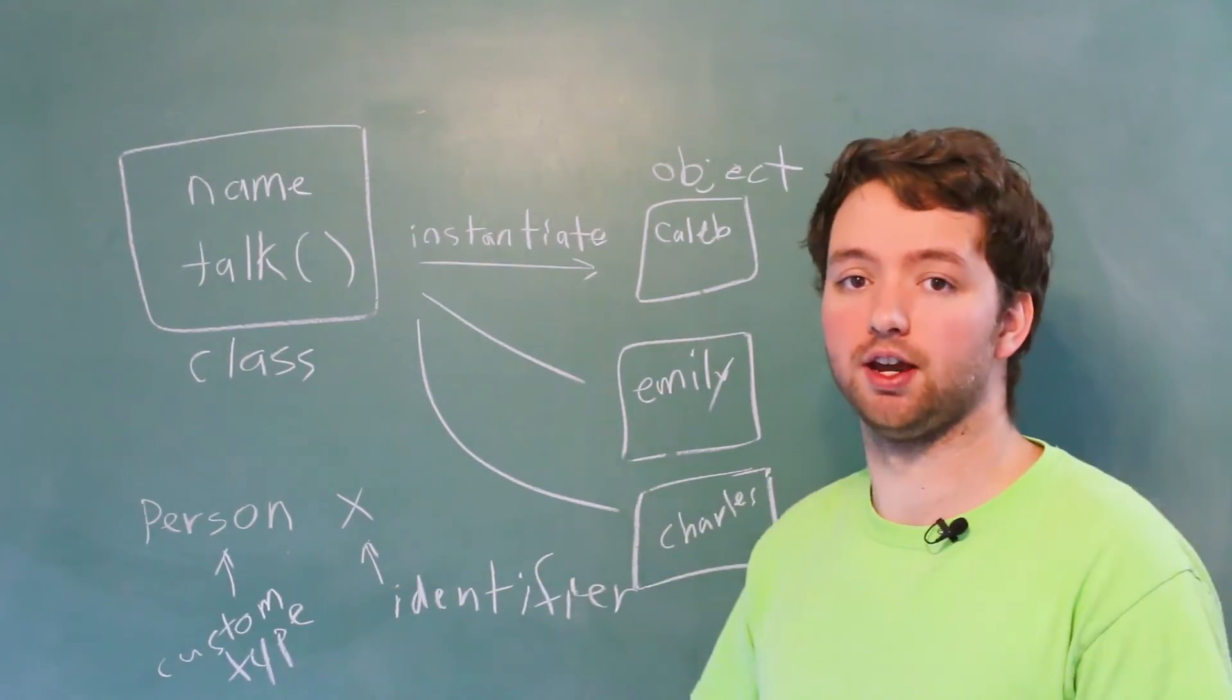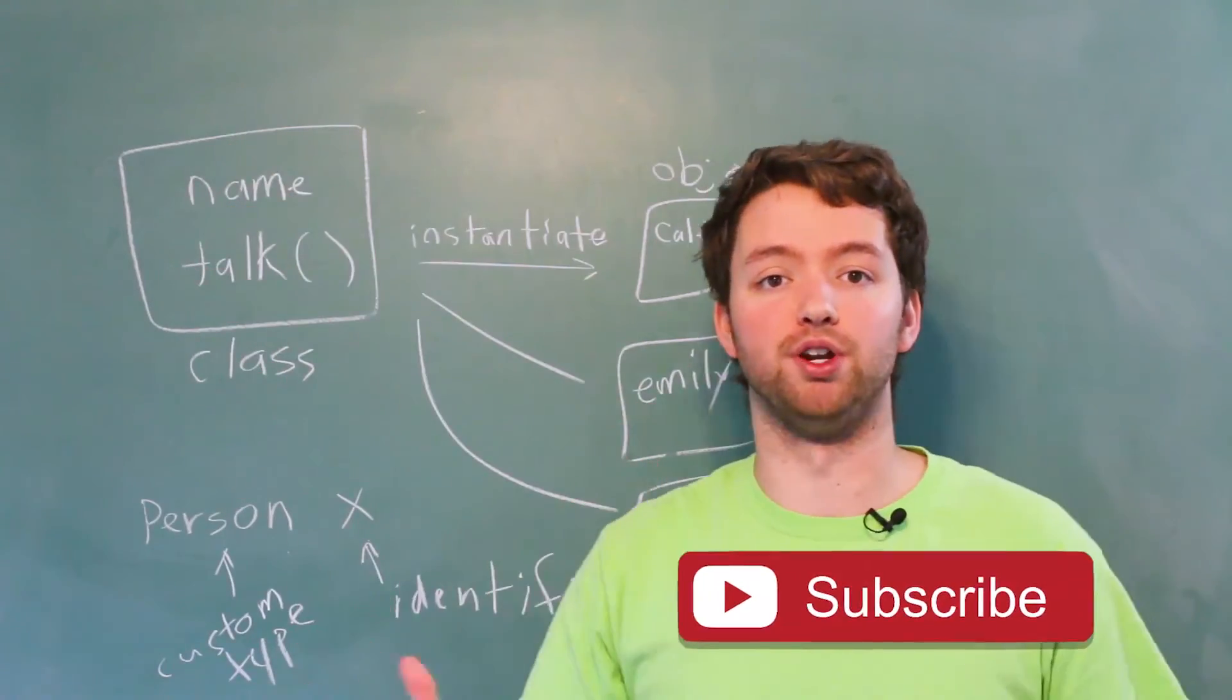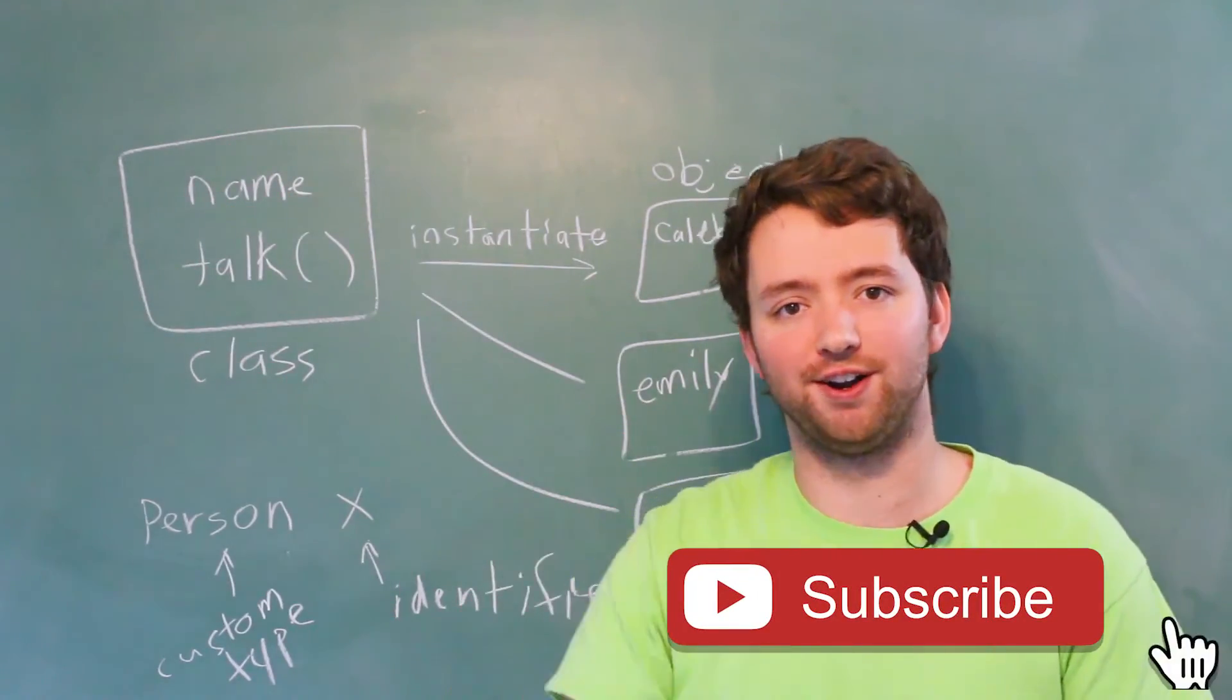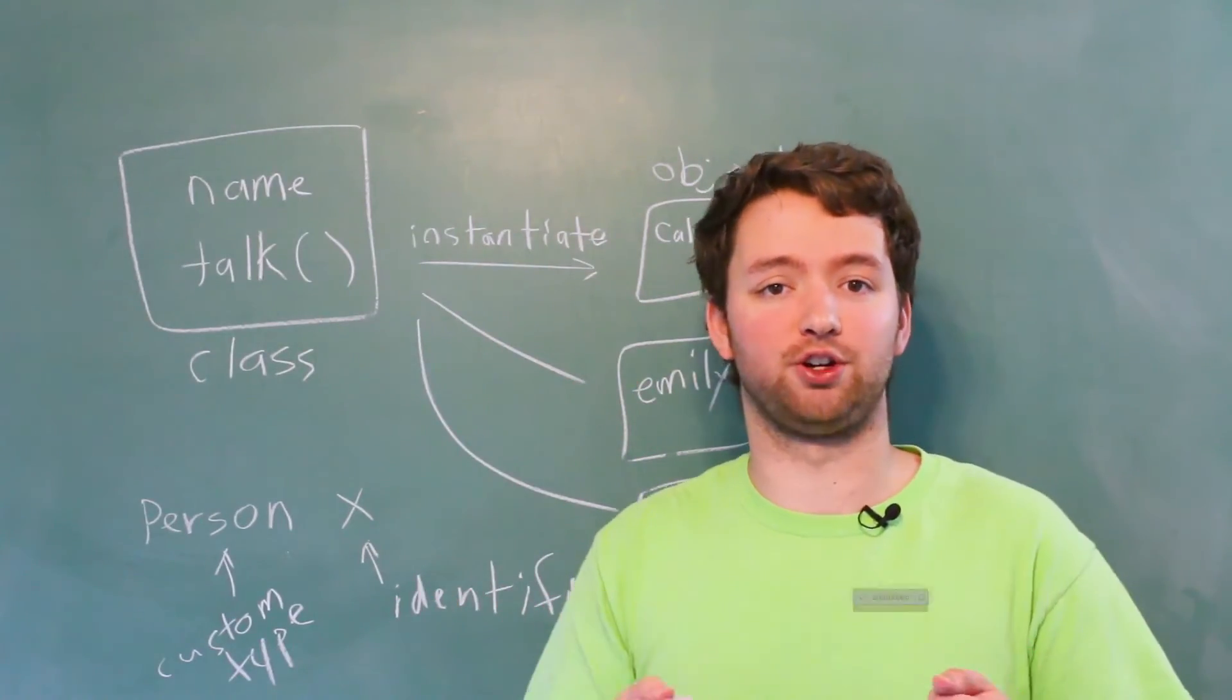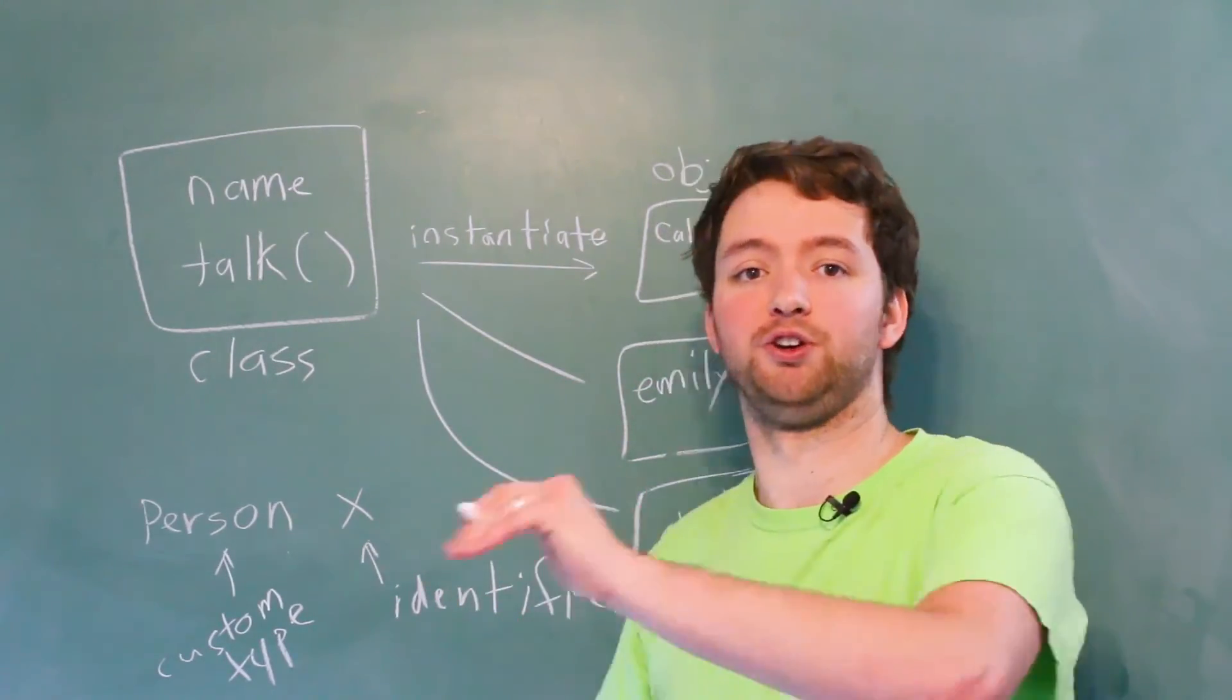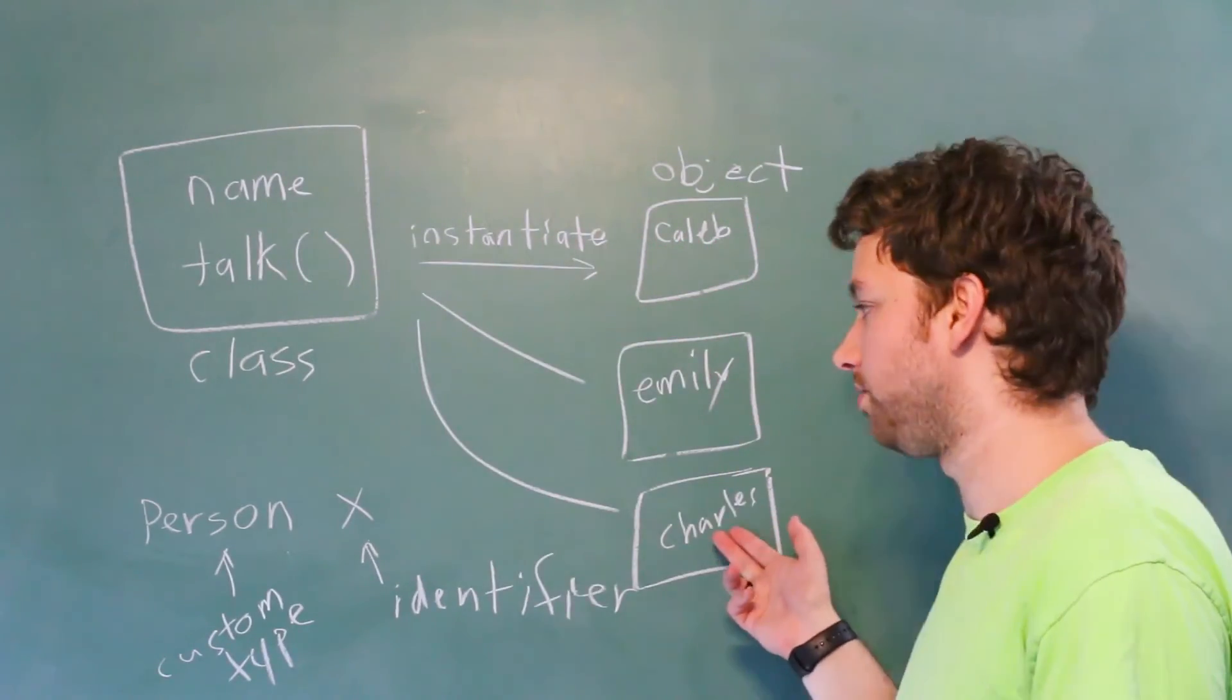But for now, all you need to understand are three things. Class is the blueprint, the structure. It's the cookie cutter. An object is an instance of that. So taking that cookie cutter and making three cookies. In this situation, we made people, we made Caleb, Emily, and Charles.